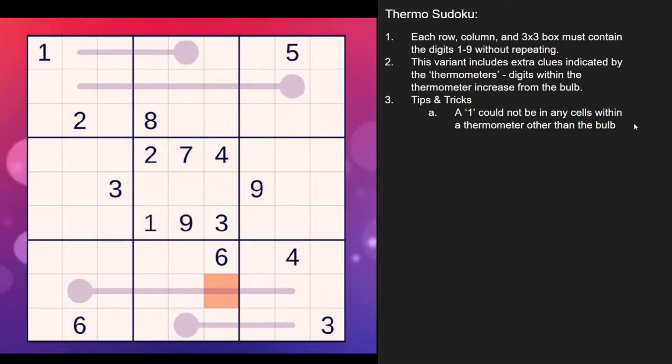Now a one doesn't have to be on the thermometer, but if it is, it has to be at the bulb. You can't have a one anywhere in the middle or at the tip because there's no digit lower than a one. So that's helpful to know because if we look at this one in normal Sudoku rules, if we look at this box here, a one can't be here. But because of the thermometers, you know it also can't be any of those.